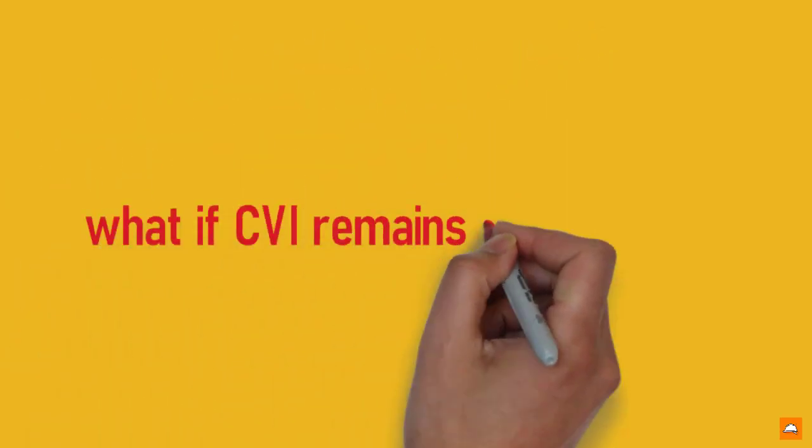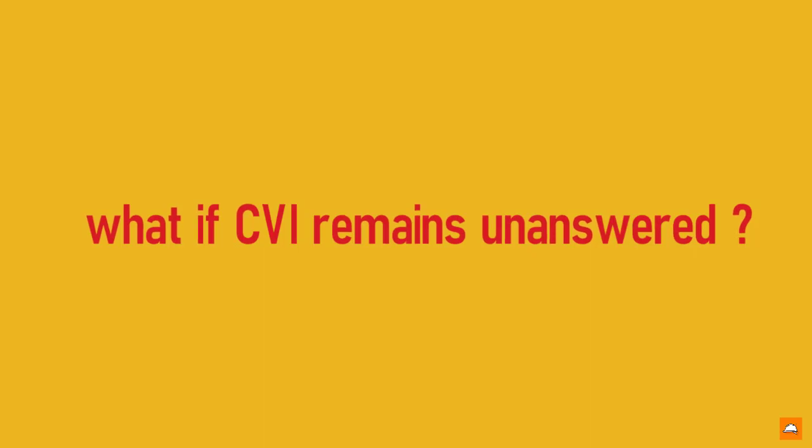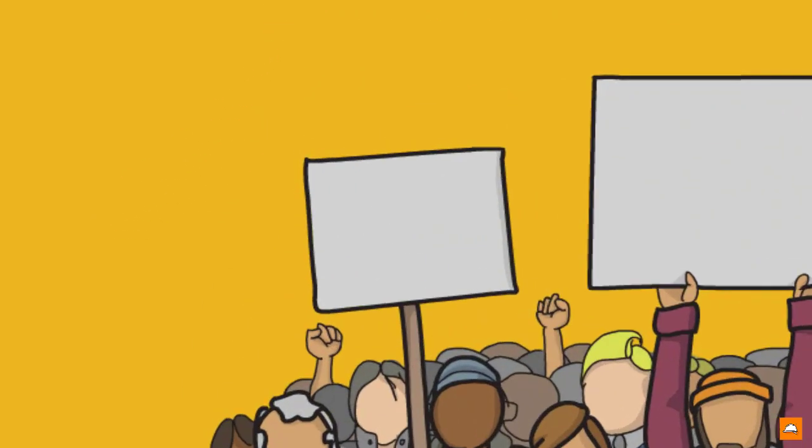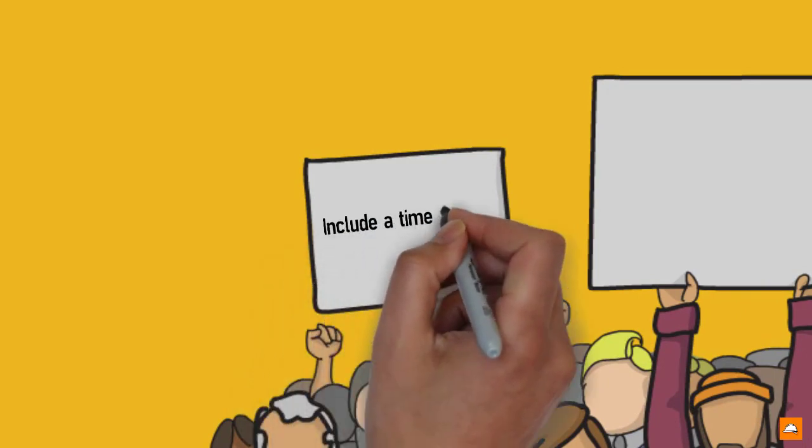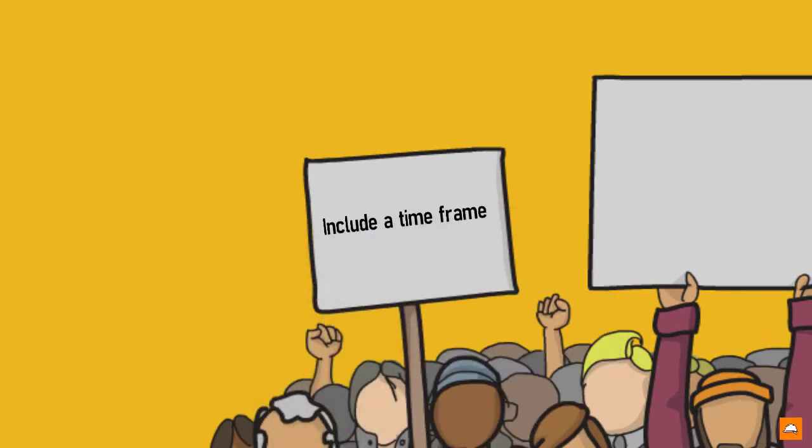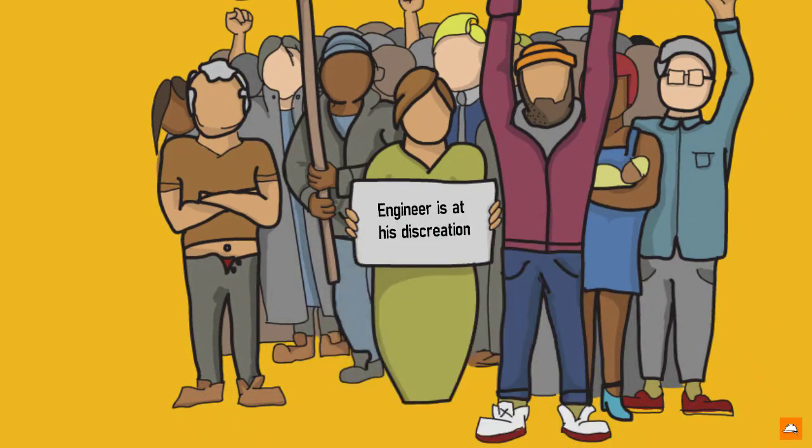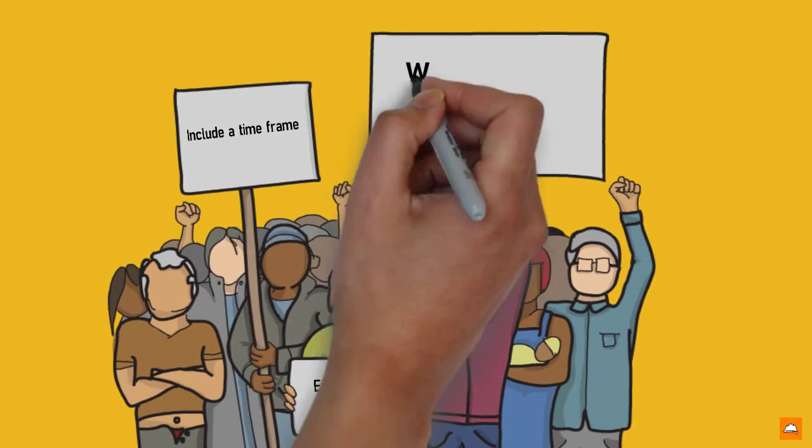Once again, coming back to the story, what if CVI also remains unanswered by the engineer? One could argue, put a time bar to the CVI. So if engineer remains silent, take his silence as a confirmation. Another one could argue, engineer is at his discretion to decide whether to respond or not, as CVI is not a part of general conditions of the contract.